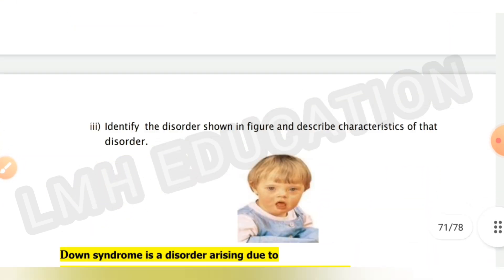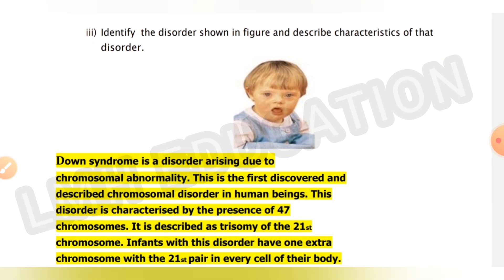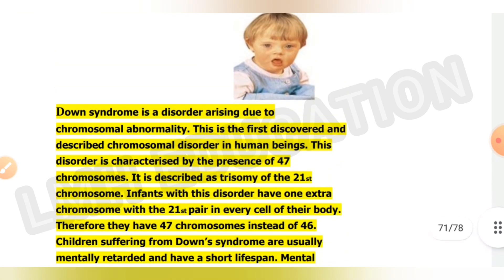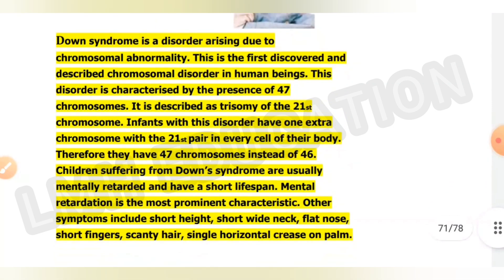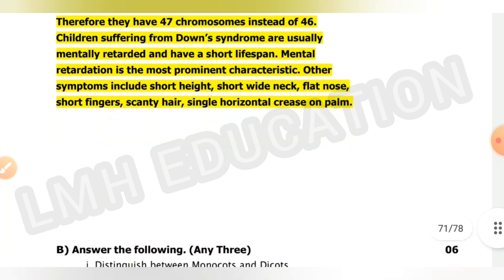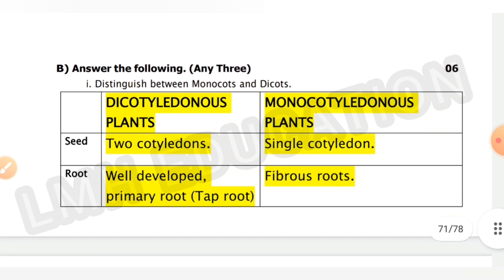Next, identify the disorder shown in the figure and describe its characteristics. This is Down syndrome, a disorder arising due to chromosomal abnormality. It is the first discovered and described chromosomal disorder in human beings, characterized by the presence of 47 chromosomes — trisomy of the 21st chromosome. Infants have one extra chromosome with the 21st pair in every cell, giving them 47 chromosomes instead of 46. Children with Down syndrome are usually mentally retarded and have a short life span. Other symptoms include short height, short wide neck, flat nose, short fingers, scanty hair, and a single horizontal crease on the palm.